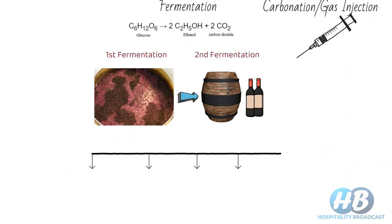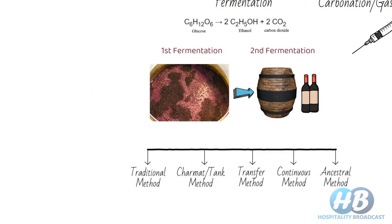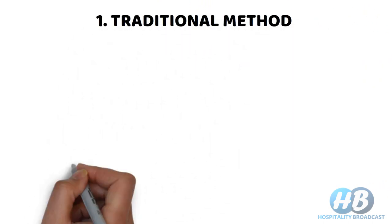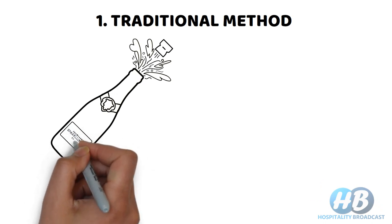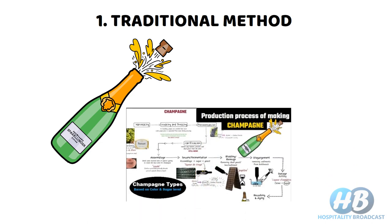Carbon dioxide can be infused by several methods. Number one is the traditional method, which is used for making the most famous sparkling wine — champagne. A dedicated video on the traditional method of making champagne is available; check the 'i' button above and a link is provided in the description below.